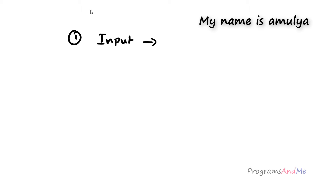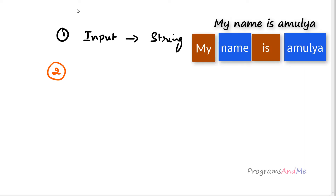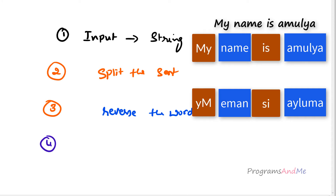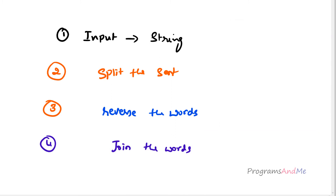To write this program, the first step is we need to take the input — the input is a sentence, a string. The next step is we need to get the words from the string, because we want to change the alphabet of each word, so we need to separate the words. Third step is to split the sentence. After splitting, we need to reverse each alphabet of each word. The last step is to join the words and print the output.